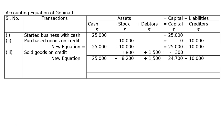Fourth transaction — Gopinath withdrew rupees 5,000 from the business for household expenses. This is called drawings by Gopinath. It will reduce cash on the asset side and reduce capital on the liability side by rupees 5,000 each. We can now find out the new equation.